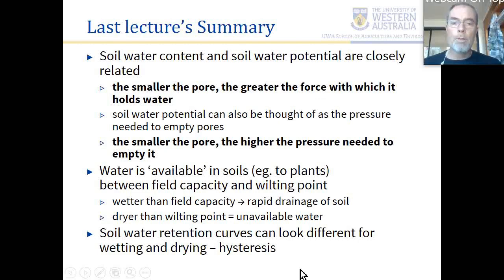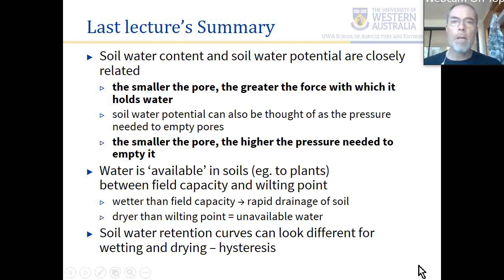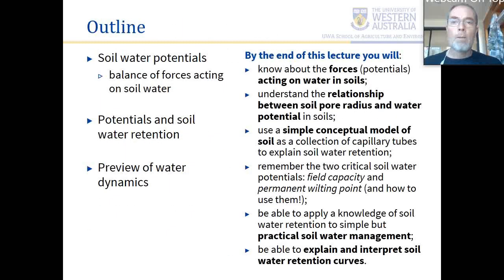The wilting point is the point at which the osmotic potential plants can exert on soil water is not strong enough to extract it from the soil anymore. For crop plants that's at minus 1500 kilopascals, but maybe a little higher for species adapted to drier conditions. We also touched on hysteresis in soil water retention curves — looking different for wetting and drying — related to the geometry along a pore system.